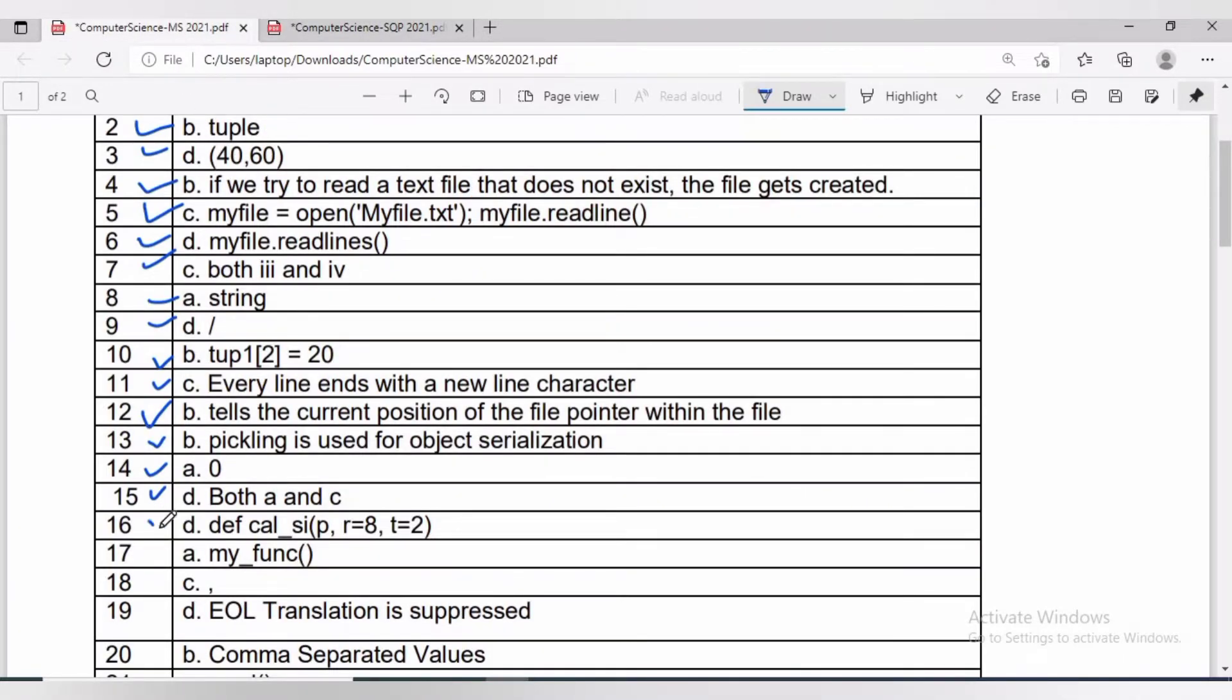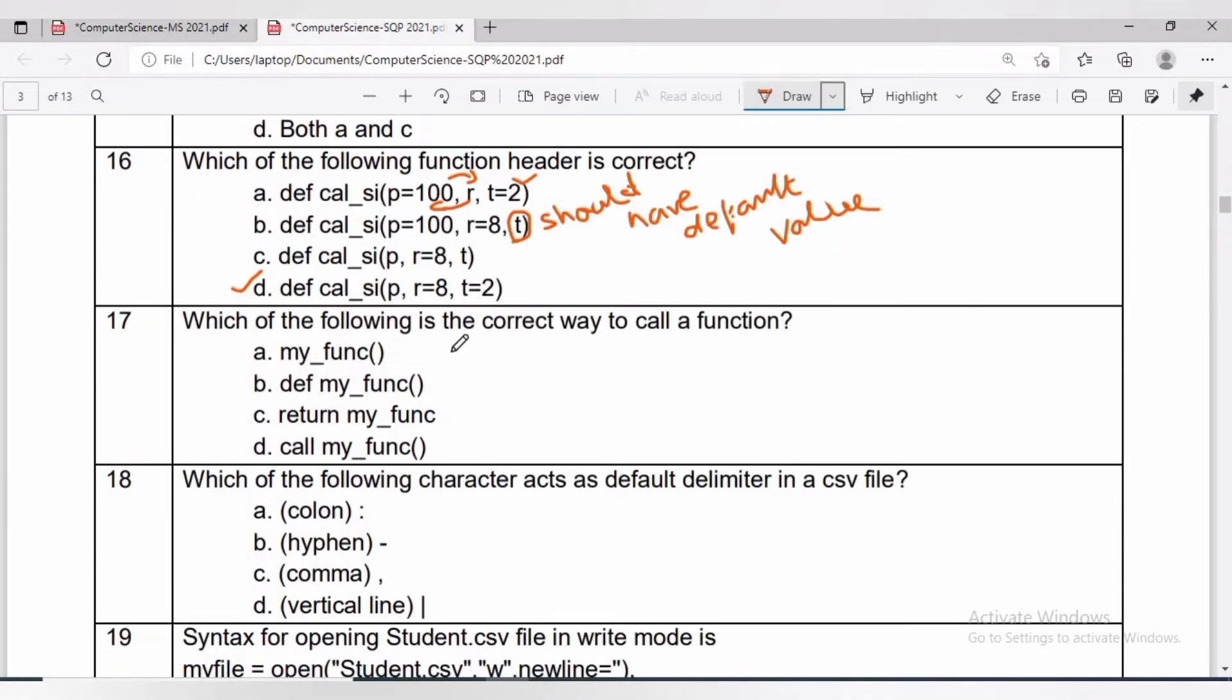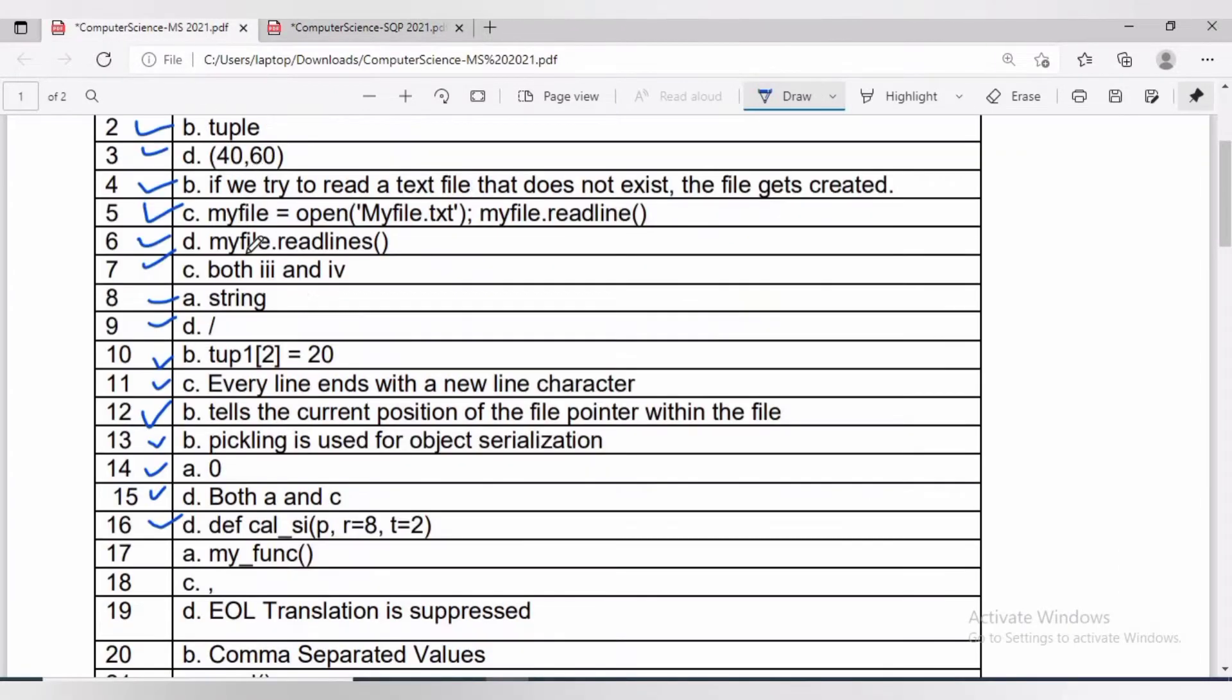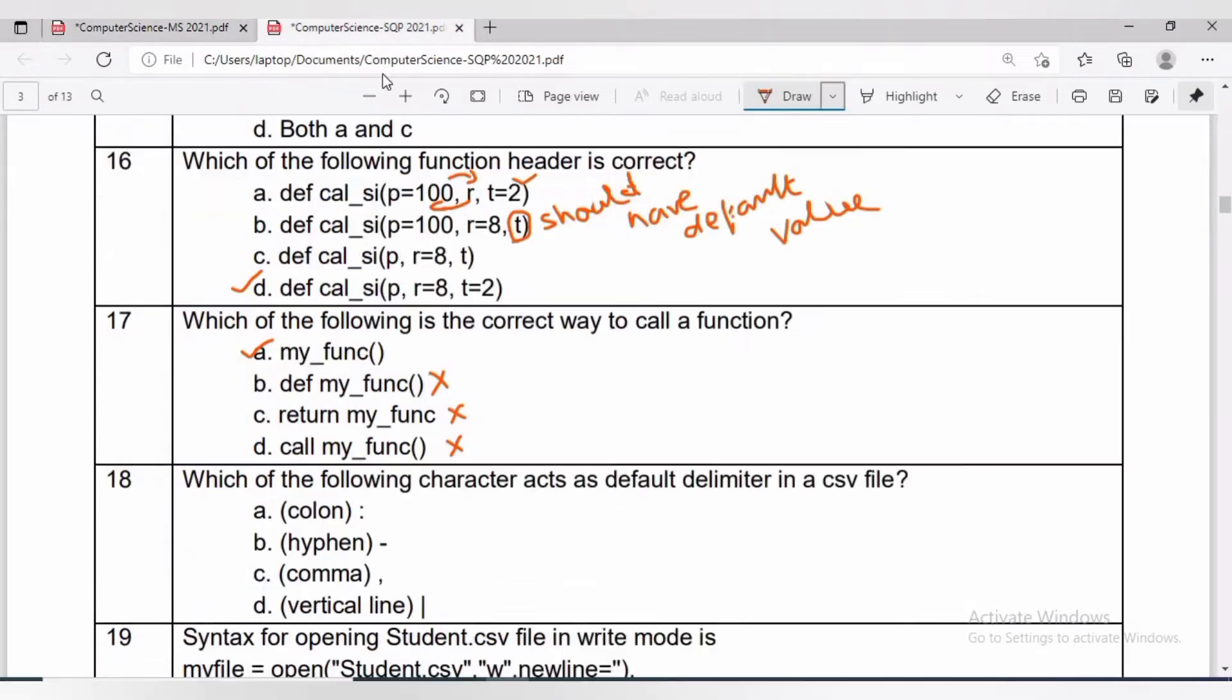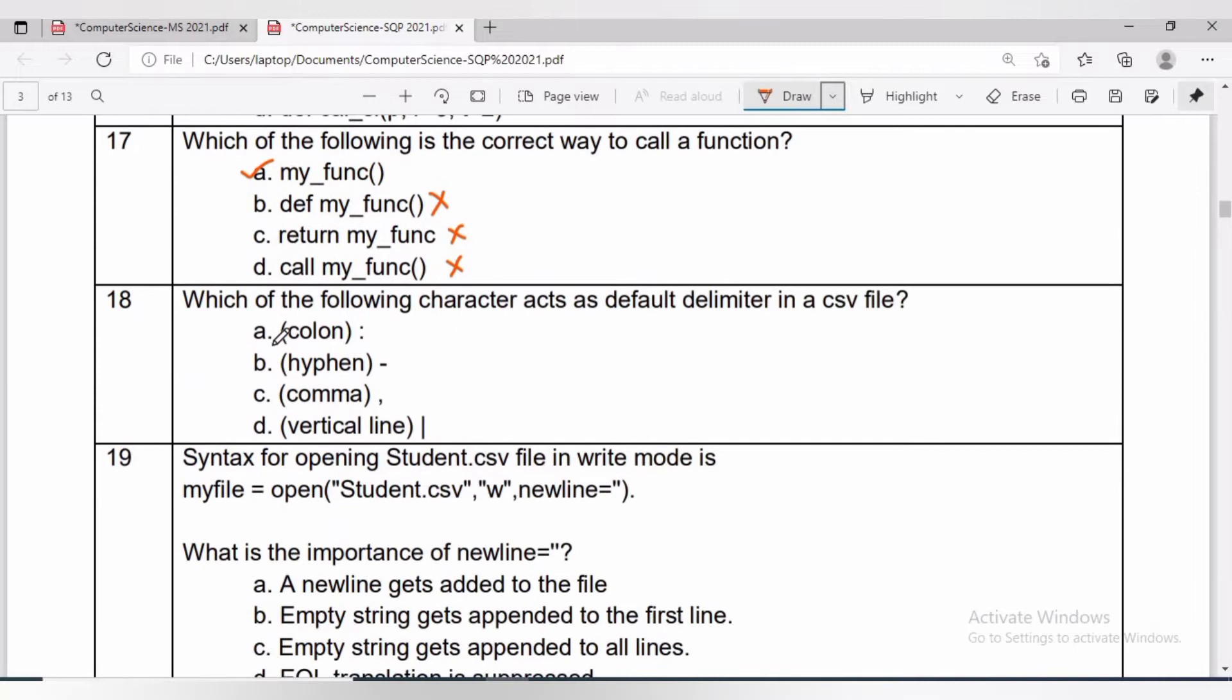Question 17 is: which of the following is the correct way to call a function? The correct way to call a function is option A, my_func(). We can check the answer.